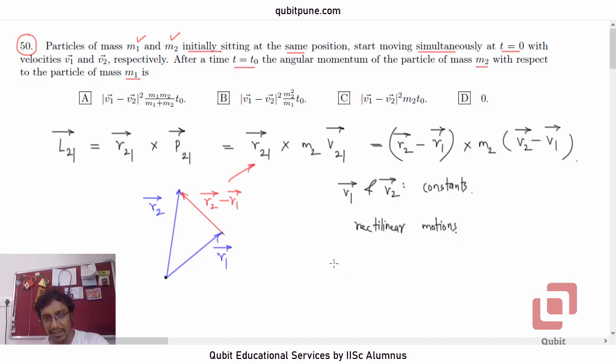So we can actually say that r2 bar will be t0 v2 bar. For rectilinear motion in the same direction with constant velocity, with uniform velocity, what is the conclusion that we can draw? r2 bar is t0 v2 bar because v2 bar is a constant. So the distance traveled, that is the magnitude r2, will be the speed multiplied by the time. And similarly, r1 bar is equal to t0 v1 bar.